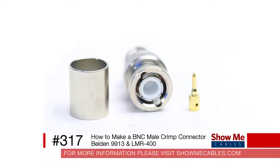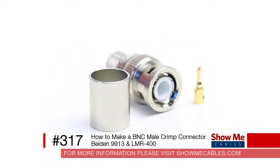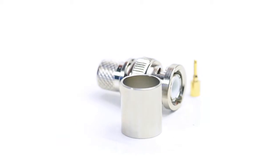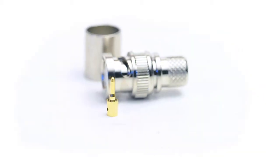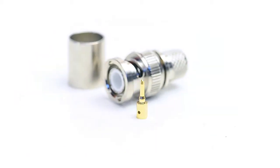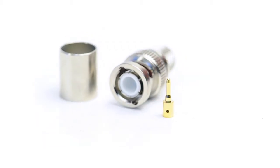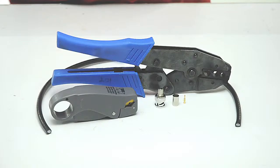Hi, this is Brian from Show Me Cables, and today I'm going to show you how to terminate a male BNC crimp connector for Belden 9913 or LMR400. For today's project we're going to need Belden 9913 or LMR400 cable, BNC male crimp connector, coax stripper, and a crimp tool.